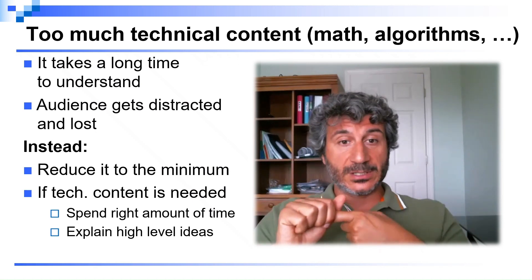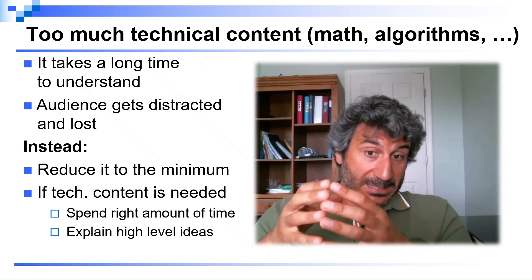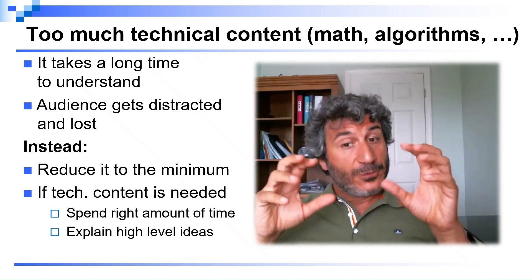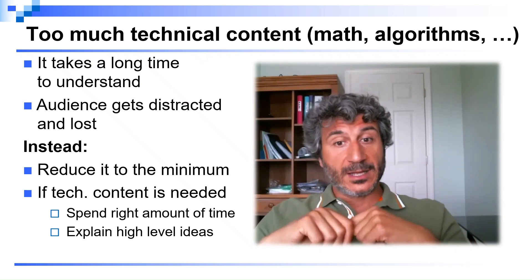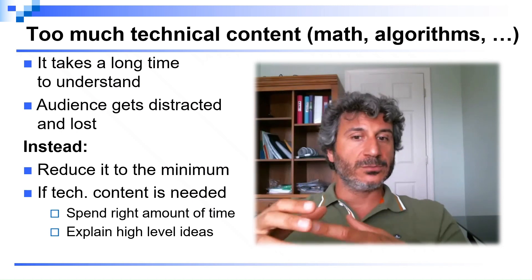So what you should do is to, first of all, reduce the technical content to a minimum that is just the minimum needed to explain the technical aspects of your work. If you do need to include some equations or some algorithms that are relatively complex, you have two options here.